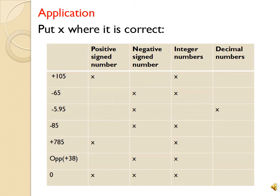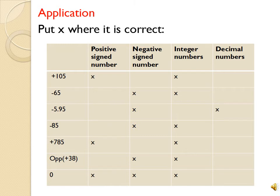Now opposite of plus 38 — it is a negative signed number. ليه؟ مع أنه هون حق يلي plus 38, بس هو ما بده 38, بده عكس 38. The opposite of plus 38 is minus 38. So I put X under the negative signed number, وأكيد integer number, not decimal. Now zero — zero is the only number that can be positive and negative at the same time, يعني zero هو الوحيد اللي فيه اعتبره positive وفيه اعتبره as a negative number. And of course it is an integer number.